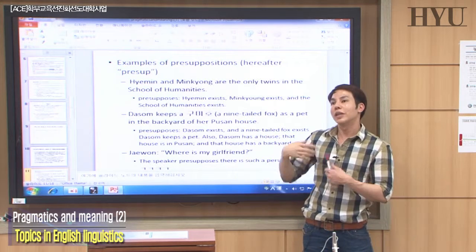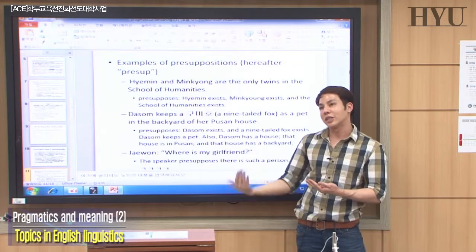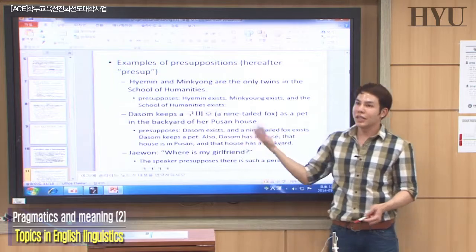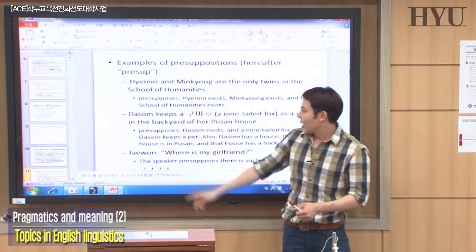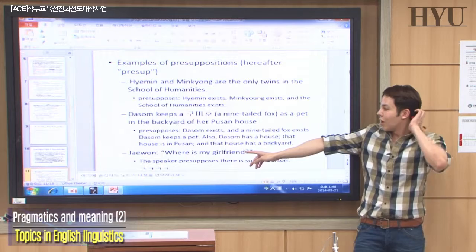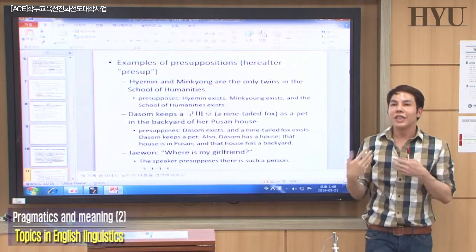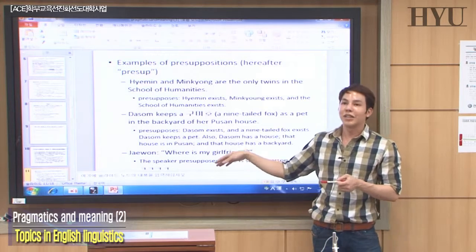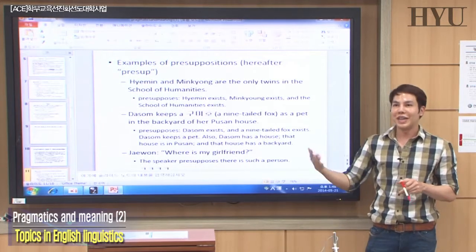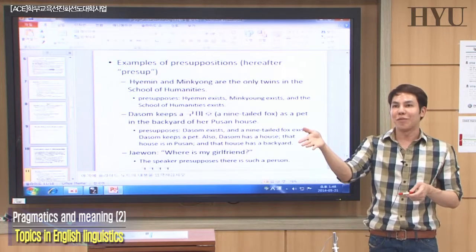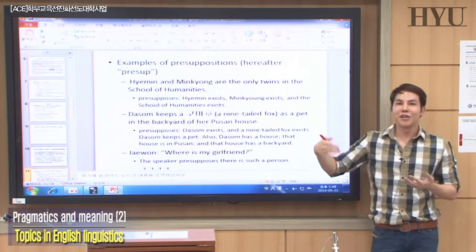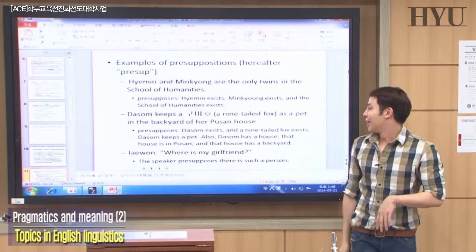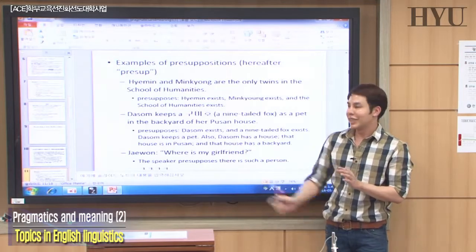The speaker doesn't have to say 'I believe there is a person named Tassom' or 'I believe she has a house in Pusan.' By just saying the sentence, he takes that information for granted. 'Jaiwon says to me: where is my girlfriend?' He asks that question because he presupposes that his girlfriend exists. Whether true or not, he believes his girlfriend exists somewhere — that's his presupposition.